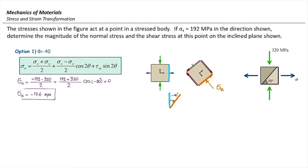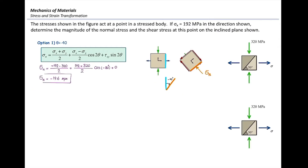But before doing that, let's talk about another way to solve this problem. Can I consider another surface to start with instead of the right surface to get to that inclined plane? We can consider the bottom surface and then rotate it by 50 degrees in order to get to that plane.